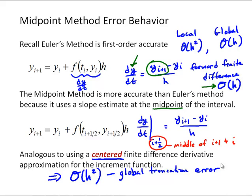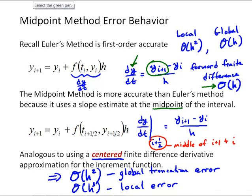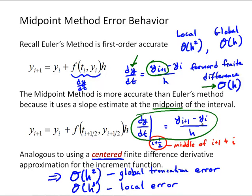This leads us to conclude that the local truncation error is third order accurate, and the global error is second order accurate. The main reason is that the formulation of the midpoint method looks like a centered finite difference derivative, since we're taking the derivative at the midpoint between yi plus one and yi.